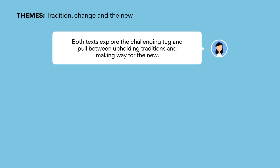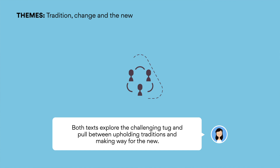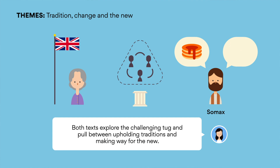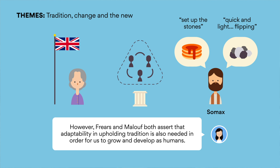Tradition, change, and the new. Both texts explore the challenging tug and pull between upholding traditions and making way for the new. As humans, we cherish traditions because they are customs or beliefs that have been passed on from generation to generation. They have sentimental value for us, and by continuing on these traditions, our actions show that we respect the path our elders have laid out for us. Tradition is not necessarily depicted in a negative light in either text, but rather shown to always have its place. The Queen's resistance against flying the flag half-mast is out of deference to her elders. Even so, Max's casual storytelling about his daughter-in-law's griddle cakes is customary, as each time his son would set up the stones, and her quick and light flipping of the cakes makes for family memories. However, Frears and Malouf both assert that adaptability in upholding tradition is also needed in order for us to grow and develop as humans.